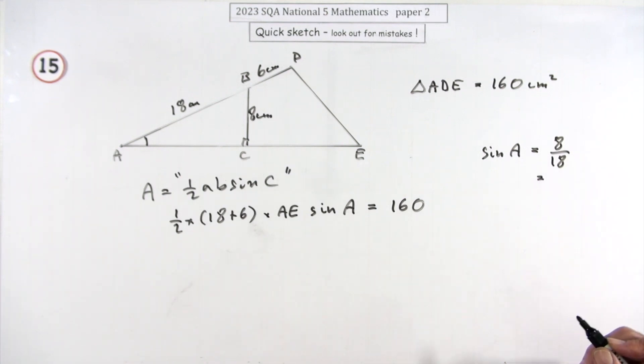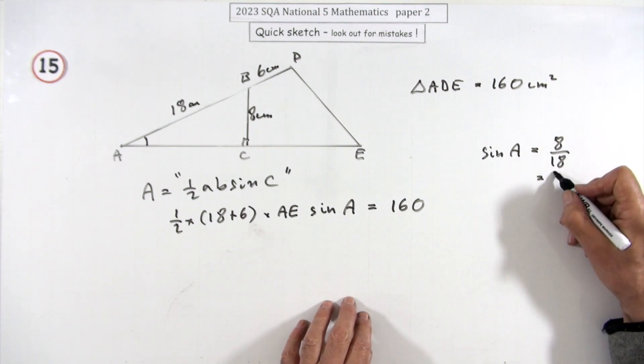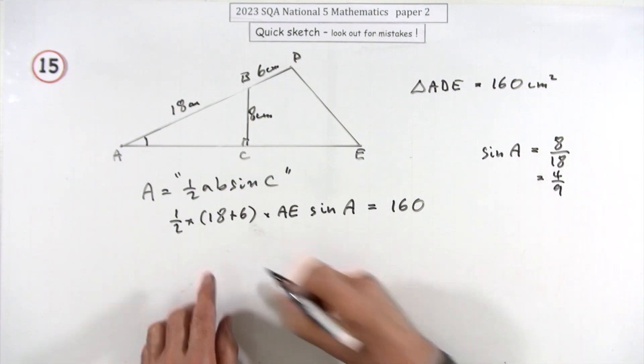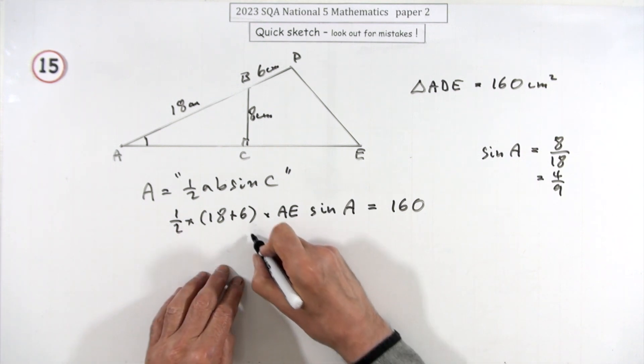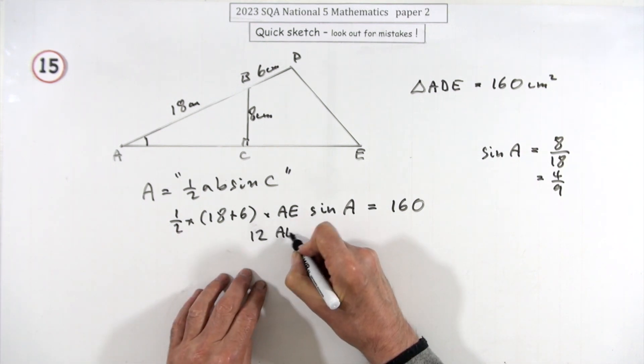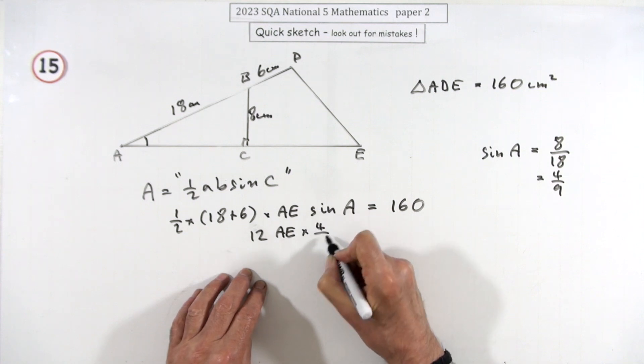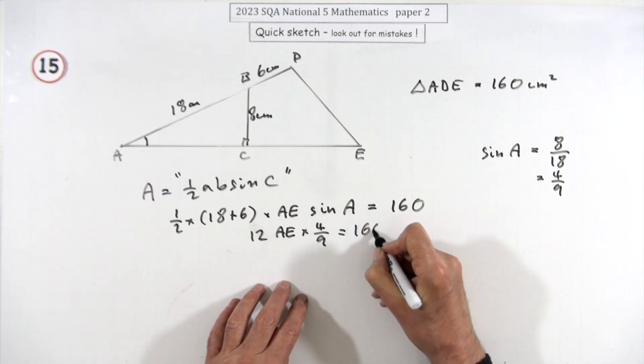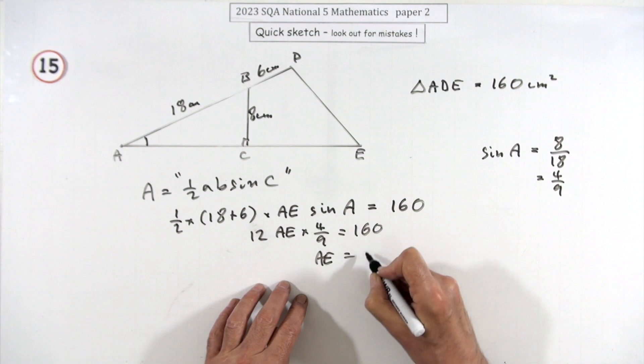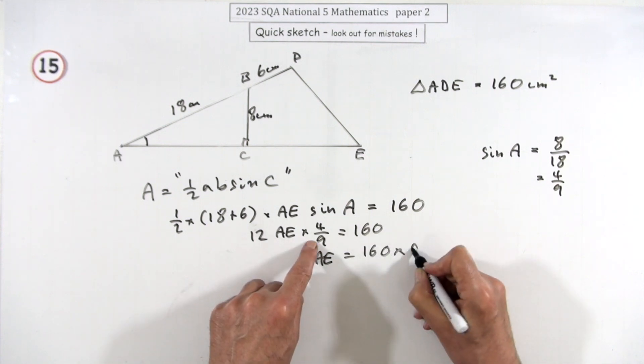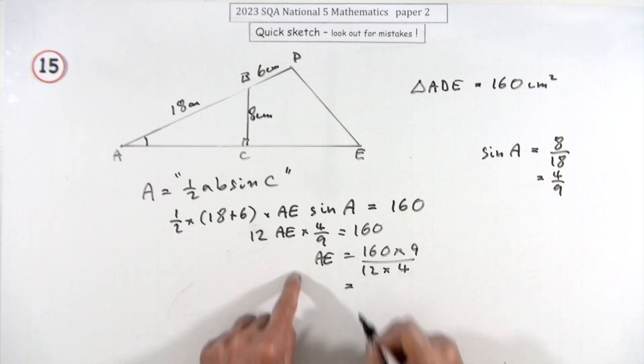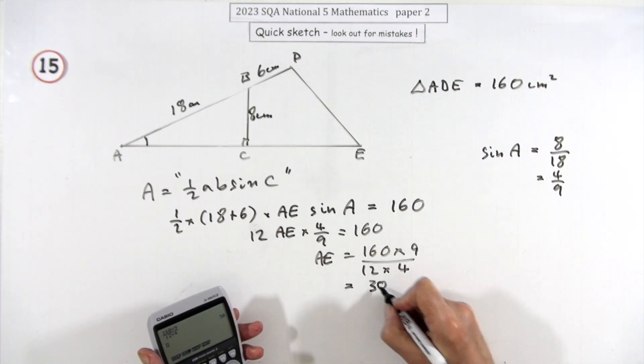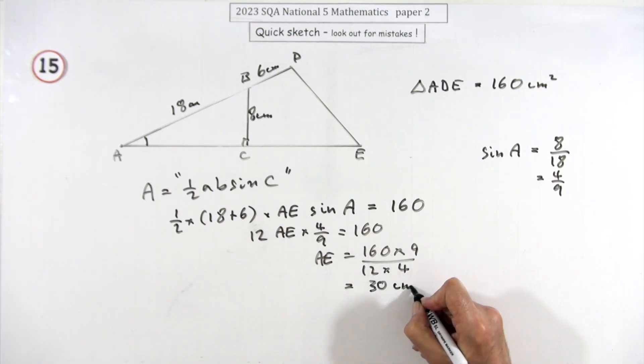Now you can simplify it or not because it's a calculator paper, but if you just half them, that's 4 ninths. So just popping that into there, simplify that as well. 24 half that's 12, so you've got 12 times AE times 4 ninths should come to 160. So AE will just be, we'll take the 9 across and multiply and take the multiplying ones across and divide, and that comes to 30. So 30 centimeters.